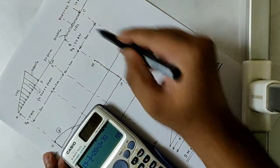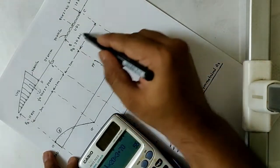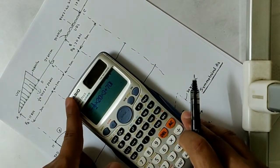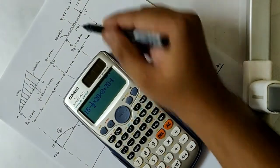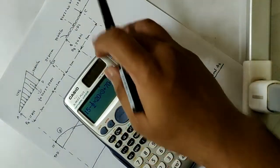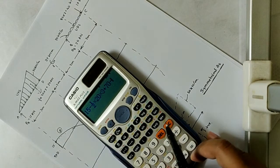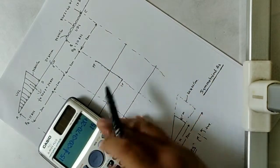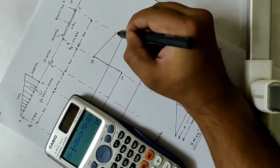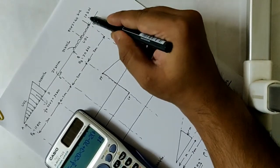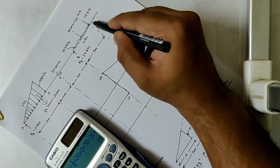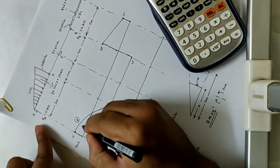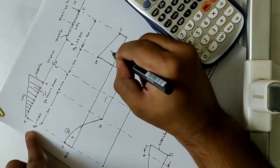Now we know the curve in the SFD for a UDL is a slanting line. We will find the value of that. Since it is acting downwards, we have a negative sign: minus 20 into 2, so it comes to positive 50. Then we have an upward reaction force of 15 kN. So this section is positive, the next is negative, and this last part is positive again.